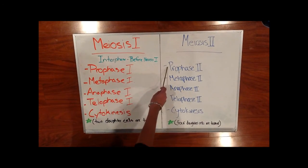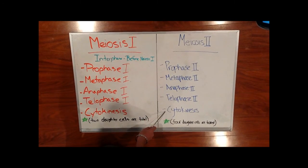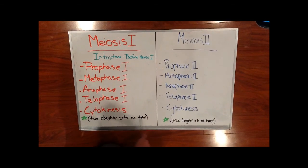In meiosis 2, prophase 2, metaphase 2, anaphase 2, telophase 2, and cytokinesis occurs. At the end of meiosis 1, two daughter cells are formed in total.